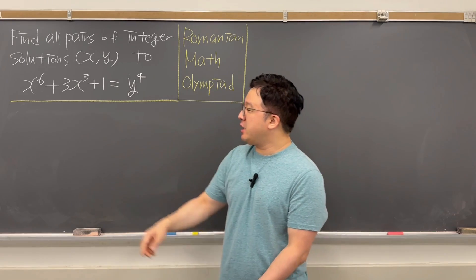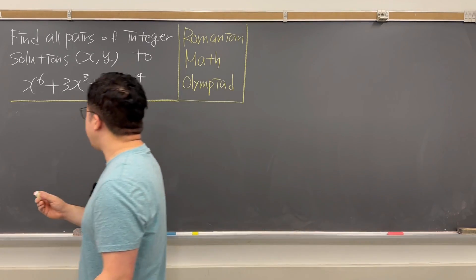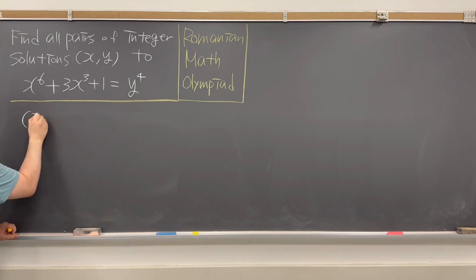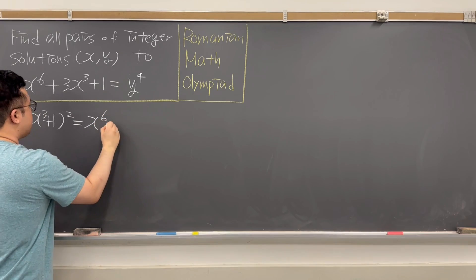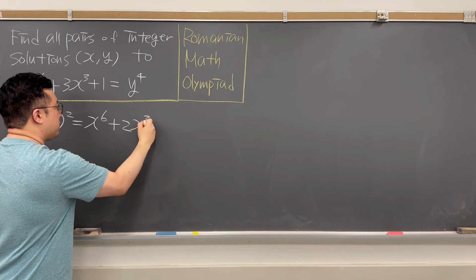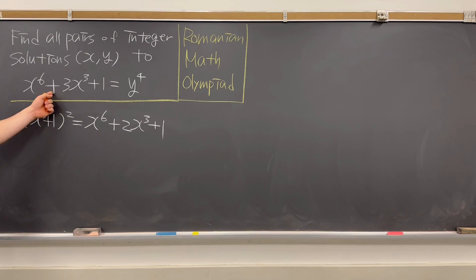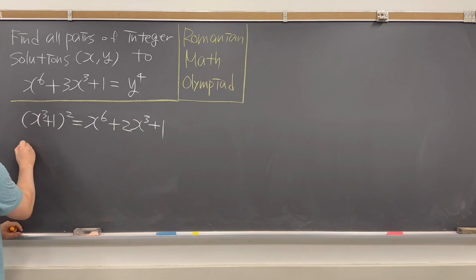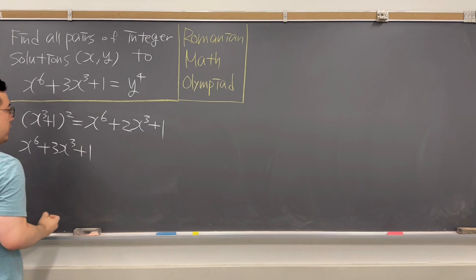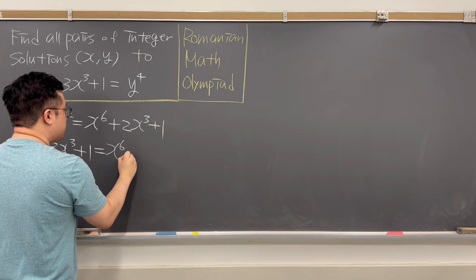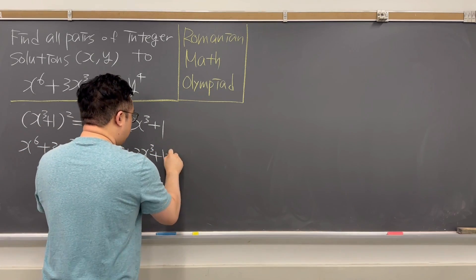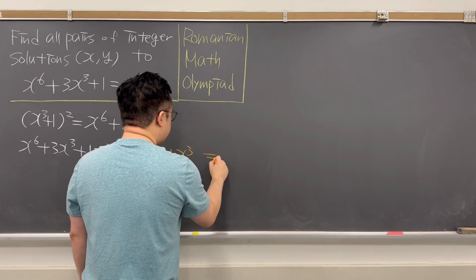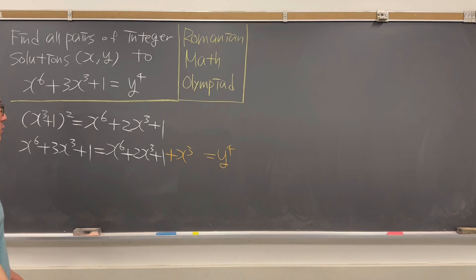Only by taking a look at the left-hand side of the equation, it is quite similar to x cubed plus 1 squared. If you distribute this, then we have x to the power of 6 plus 2x cubed plus 1, which is quite similar to the left-hand side. So the actual left-hand side, x⁶ plus 3x³ plus 1, is the same as x⁶ plus 2x³ plus 1, and then if you add x cubed to it, that gives us y to the power of 4.